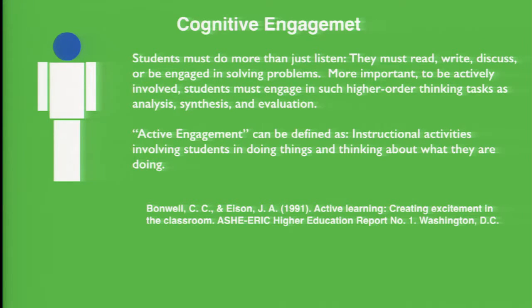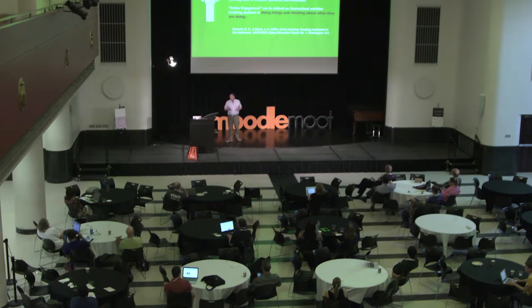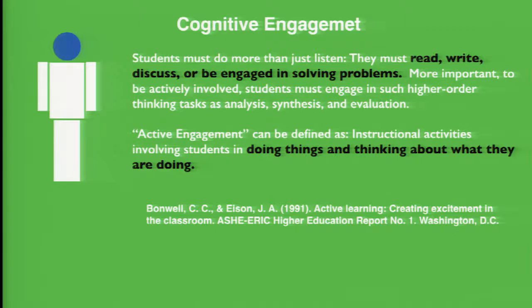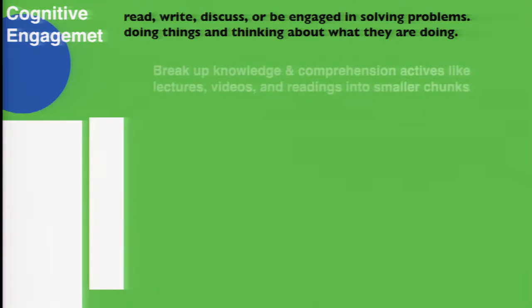Active engagement can be defined as instructional activities involving students in doing things and thinking about what they are doing. I really want to focus on these two parts: read, write, discuss, or be engaged in solving problems, and getting students involved in doing things or thinking about what they're doing. How do we do this? We call it chunking.